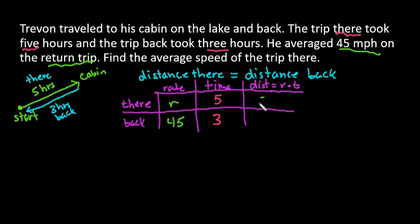So what we would do is our distance there would be five times R. And our distance back would be three times 45, which is 135. And so we would just set these equal to each other.